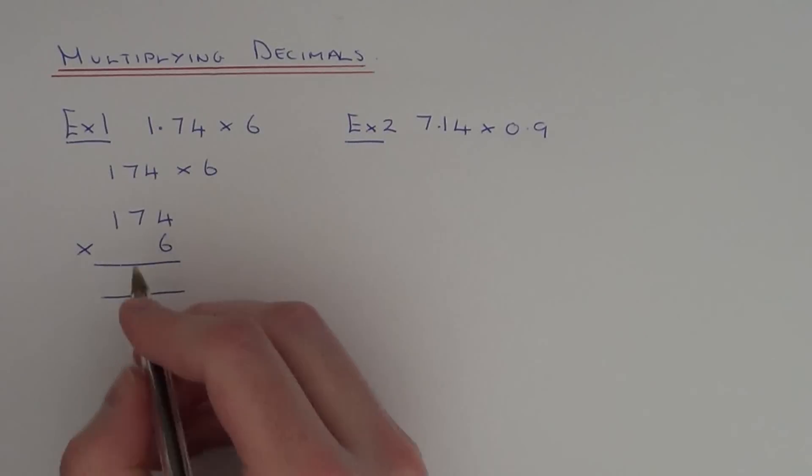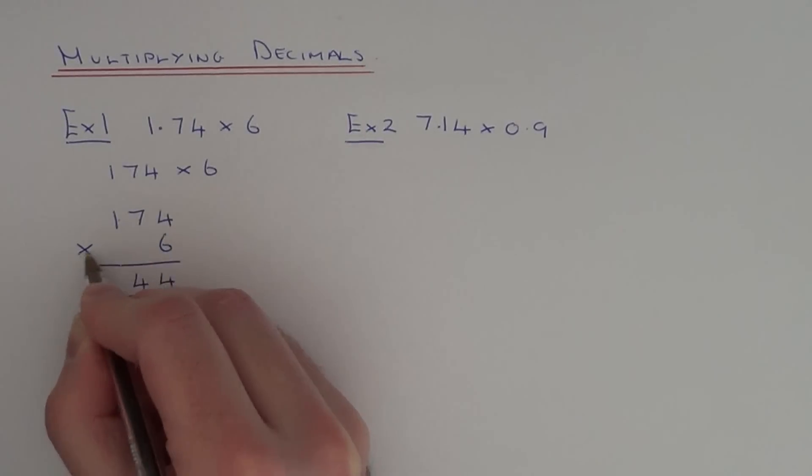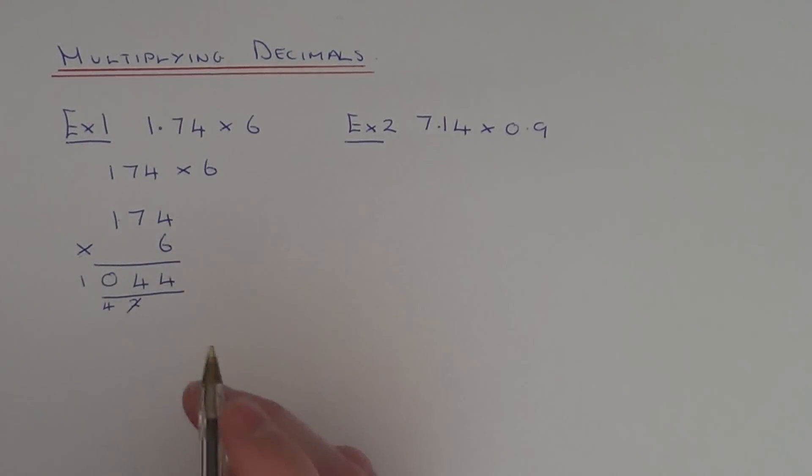4 times 6 is 24. 7 times 6 is 42 plus the 2 is 44. 1 times 6 is 6 plus the 4 is 10. So 174 times 6 is 1044.